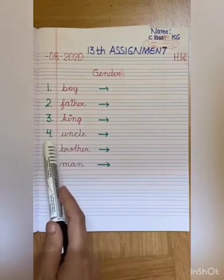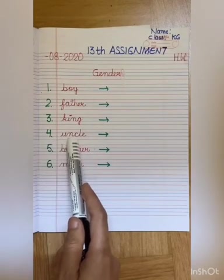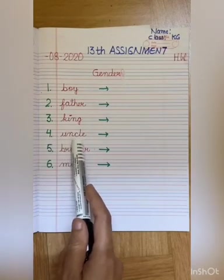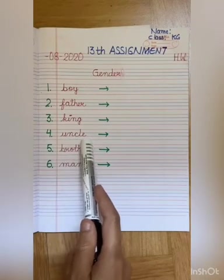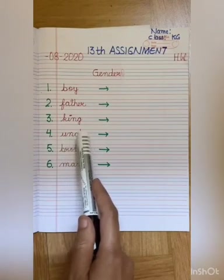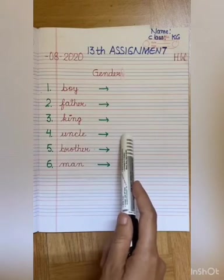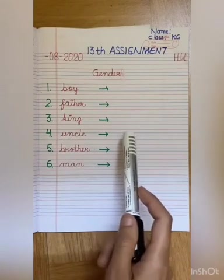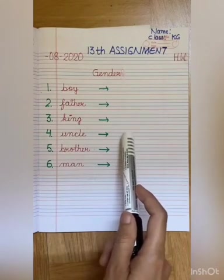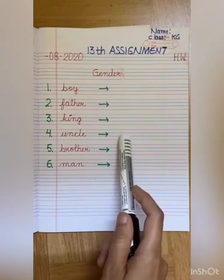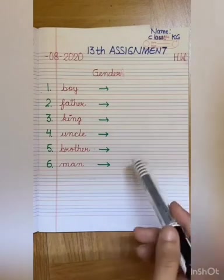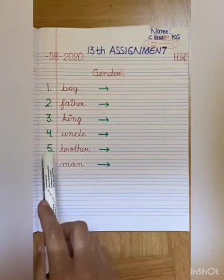Number four. U-N-C-L-E, uncle. The opposite gender is aunt. You will write the spelling of aunt: A-U-N-T, aunt.